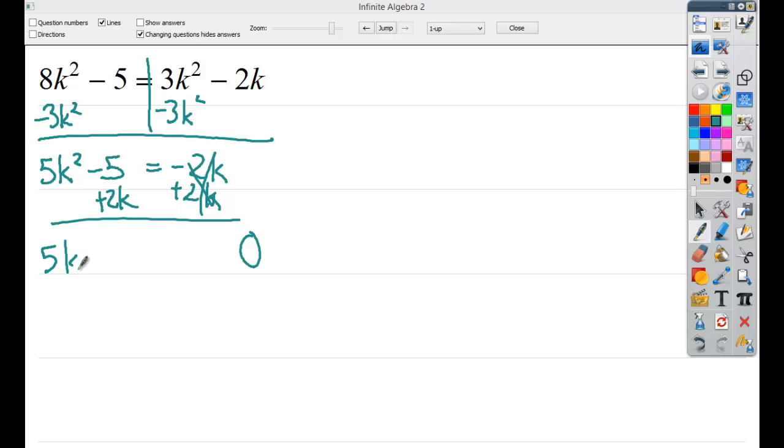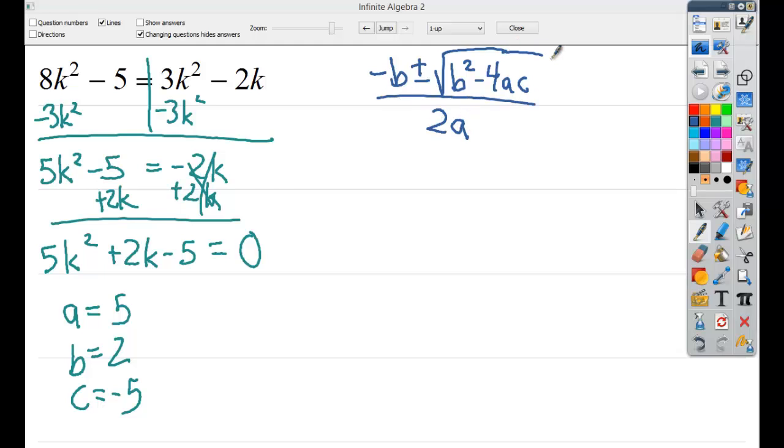I'm going to move this over. Now I finally have my 0 by itself. Ended up with 5k squared plus 2k minus 5 equals 0. Remember, these two are not like terms. My a in this situation would be 5. My b is 2. And my c is negative 5. The negative plays an important role here, because if it wasn't negative, you're going to end up with another imaginary number.